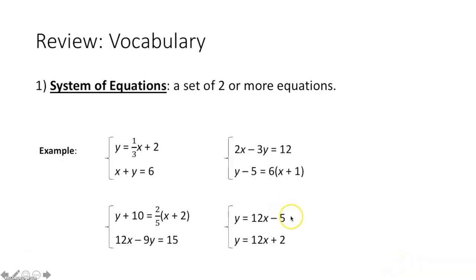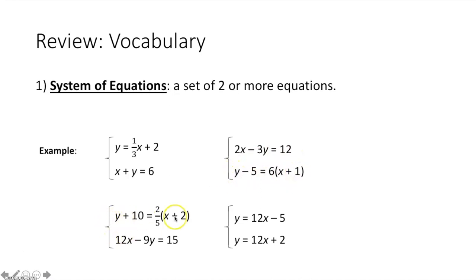First thing we're going to do is review a system of equations — that's a set of two or more equations. Here we can see four systems of equations: the first has slope-intercept form and standard form, the second has standard form and point-slope form, the third has point-slope and standard form, and the last has two slope-intercept forms. You just need two or more equations to constitute a system of equations.